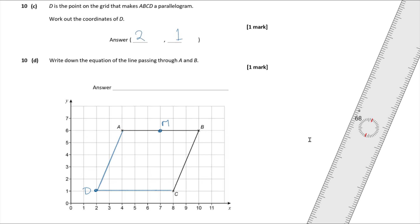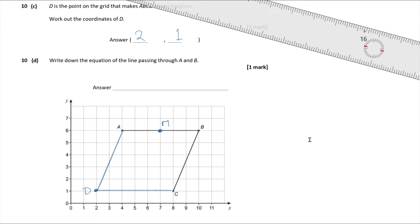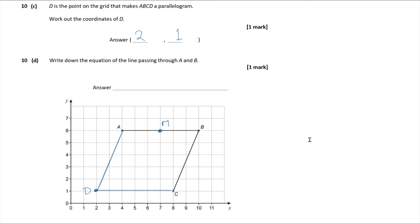Question 10d — write down the equation of the line passing through A and B. Horizontal lines always have the form y = (a constant). The line passes through the y-axis at 6, so the equation of this straight line is y = 6.